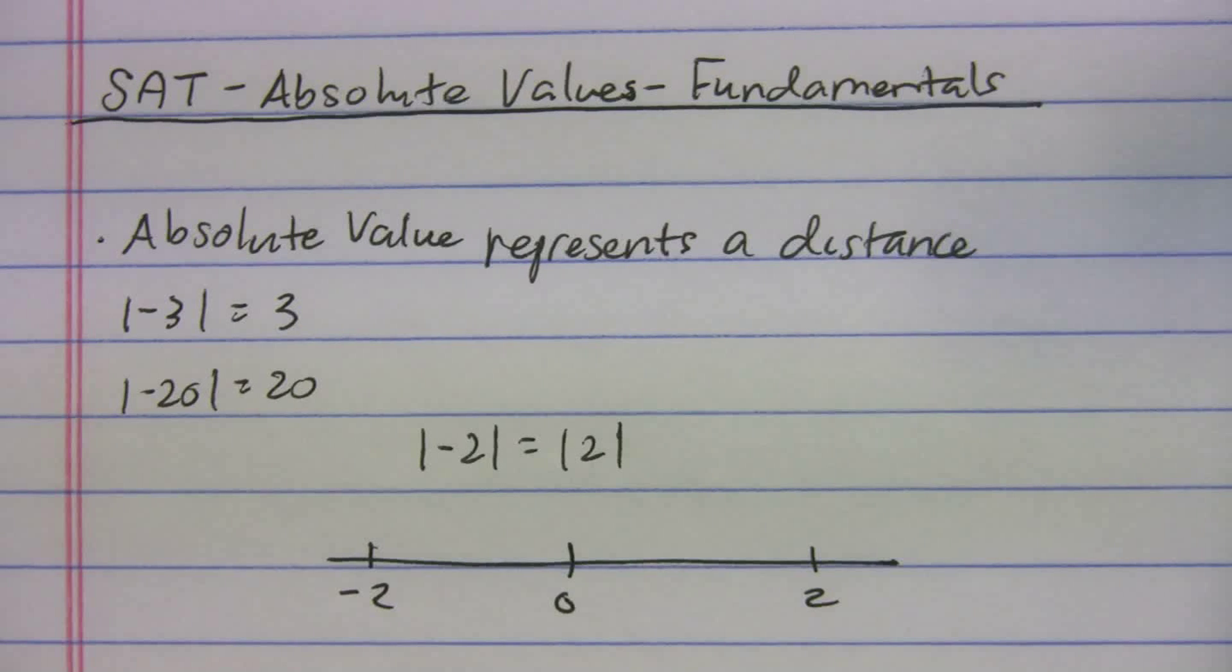The first thing you have to know is that the absolute value represents a distance. I know in school they usually tell you if you want to find the absolute value, just take away the negative sign, right? So |-3| = 3, |-20| = 20. And we can show why this happens.